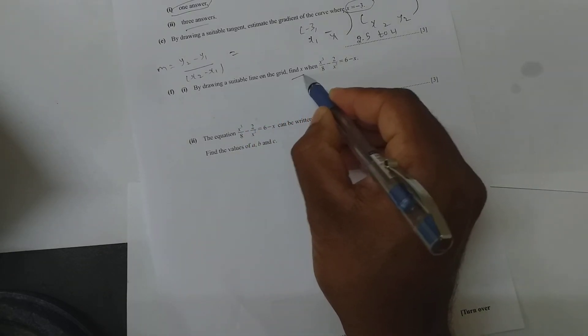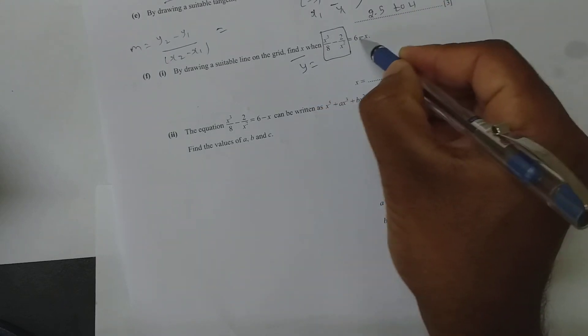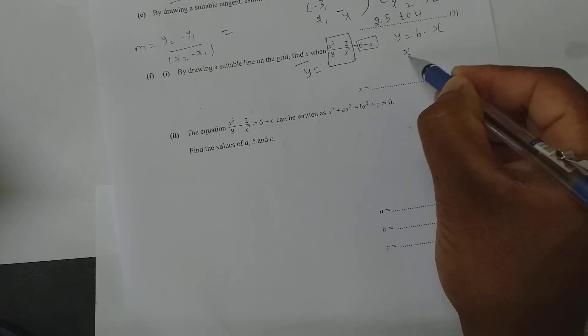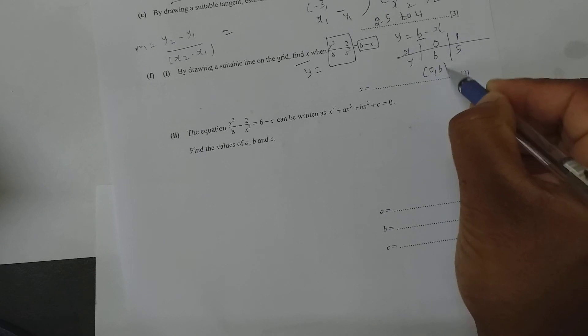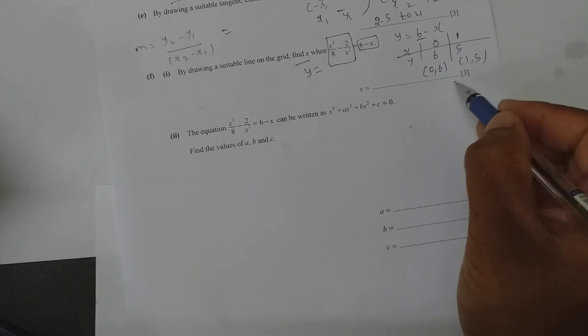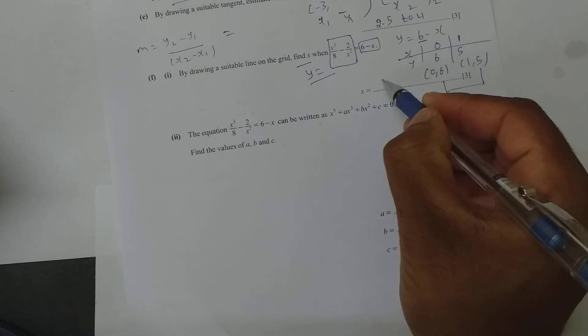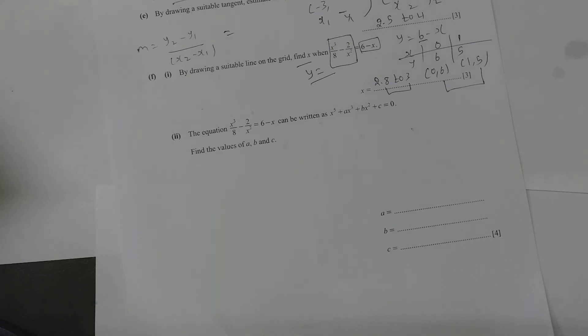Next, by drawing a suitable line on the grid, find x. You already have the curve on this side. Take y = 6 - x, which is a straight line (linear equation). Find points: when x = 0, y = 6; when x = 1, y = 5. So plot points (0, 6) and (1, 5), draw the line, and wherever this line and the curve meet, that is your value of x. It should lie between 2.8 and 2.3.